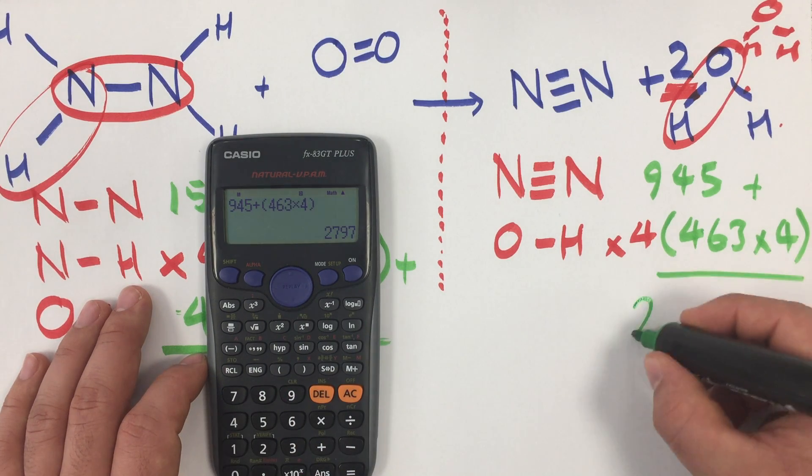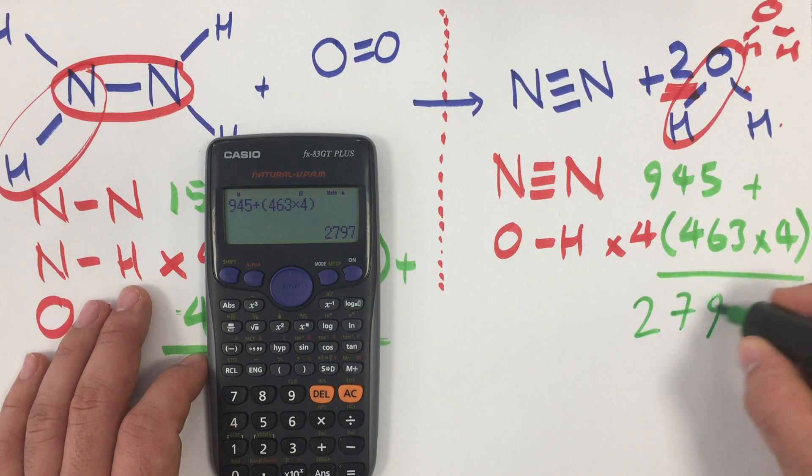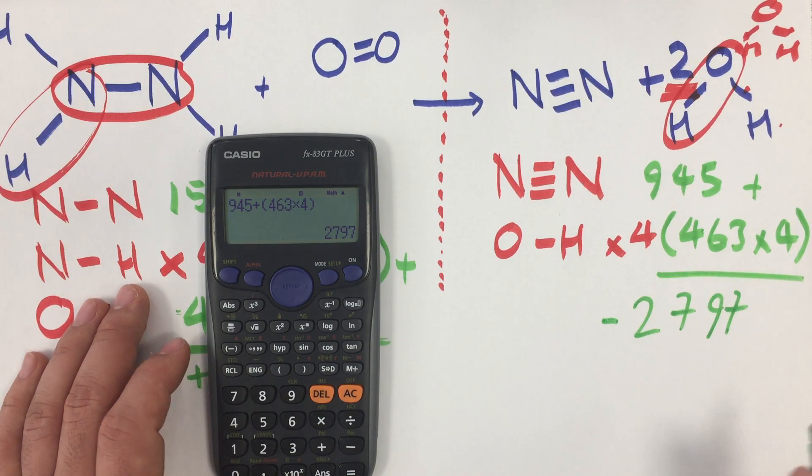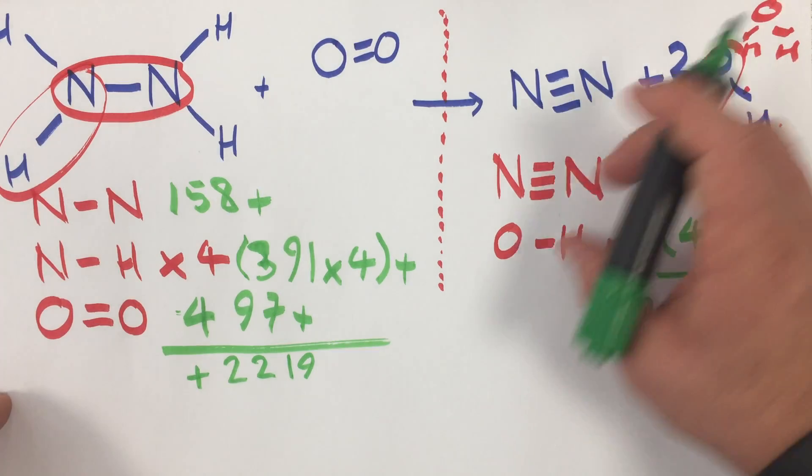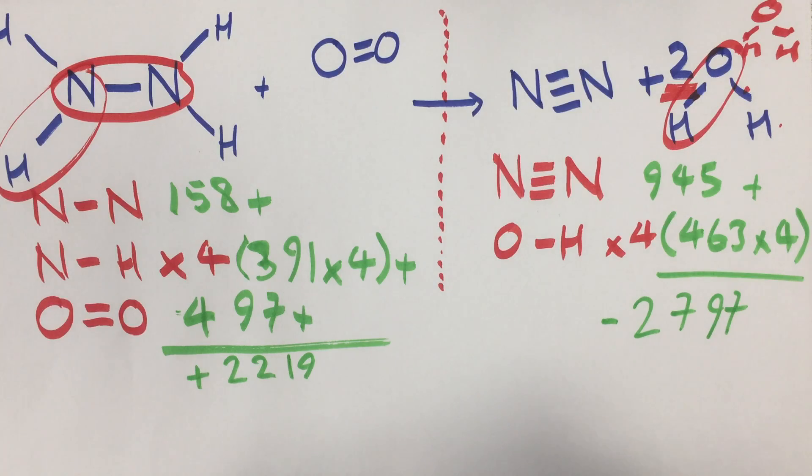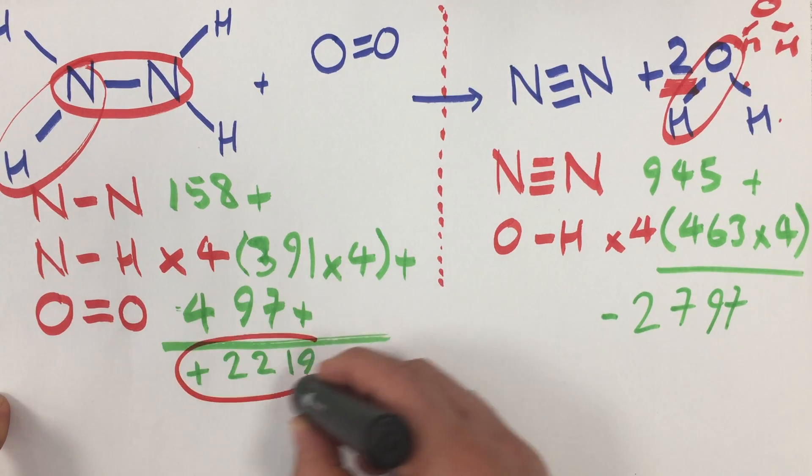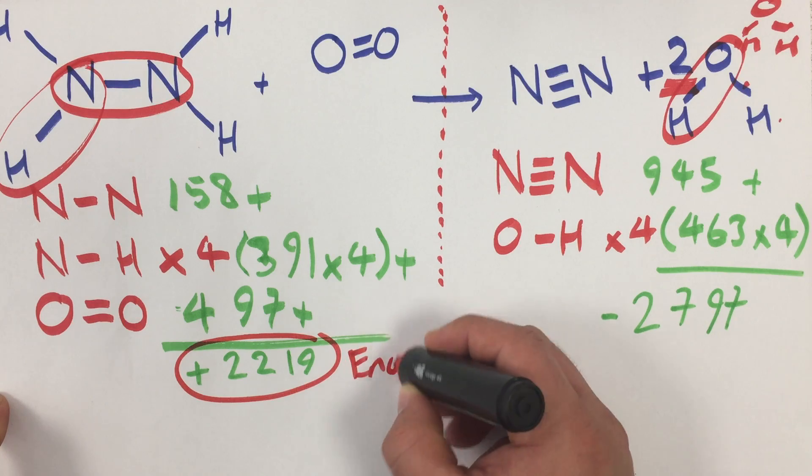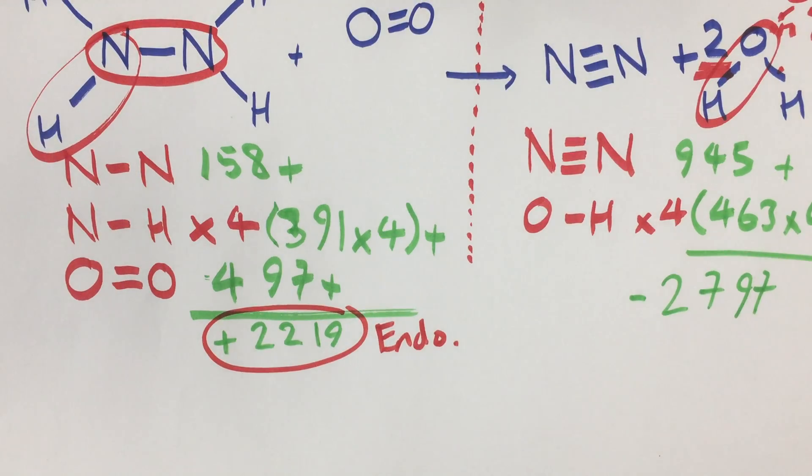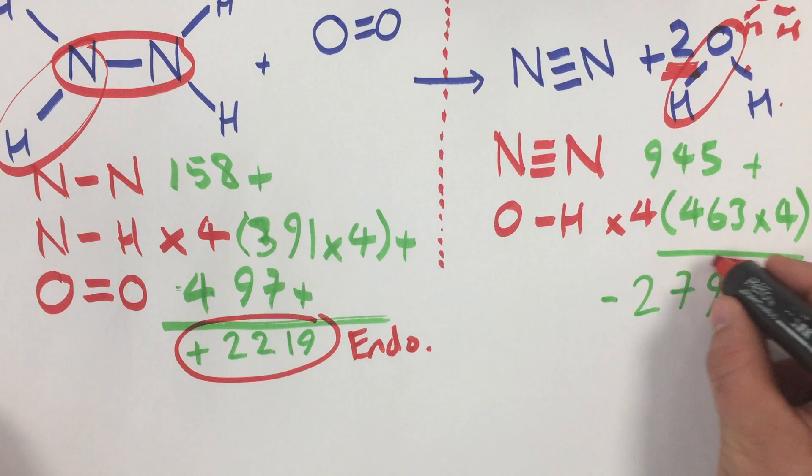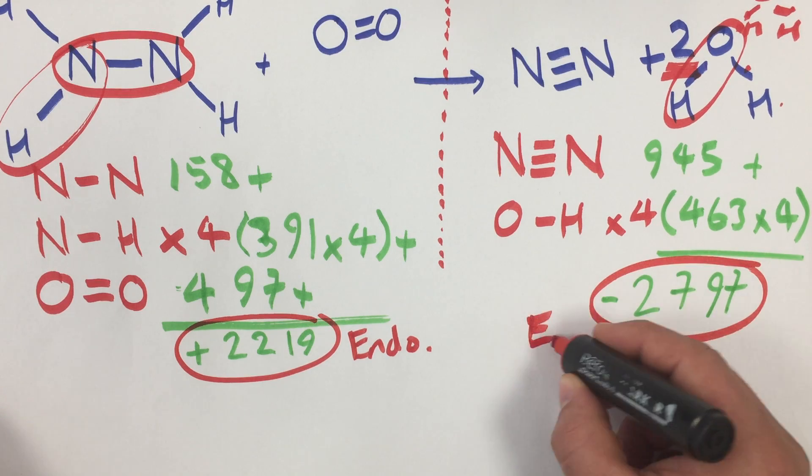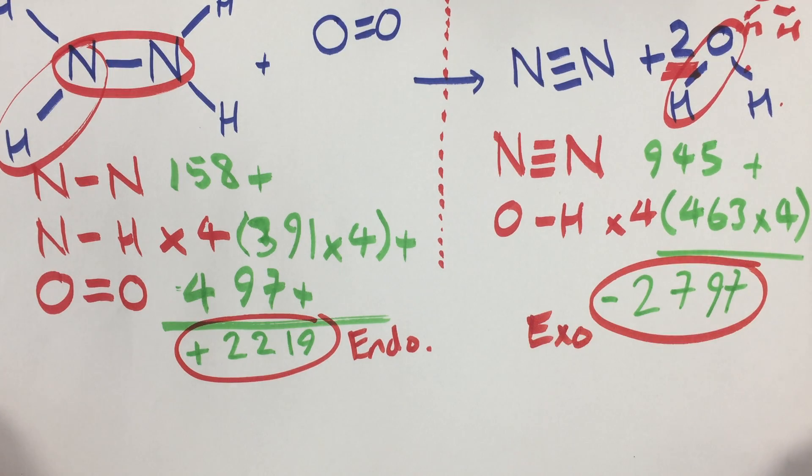But this is negative. The reason for that is because this is the energy that is going to be released when we form these bonds. So this number here is endothermic because that energy is required to break those chemical bonds. And this number here is negative, and that's because it's exothermic.